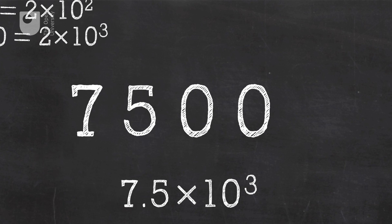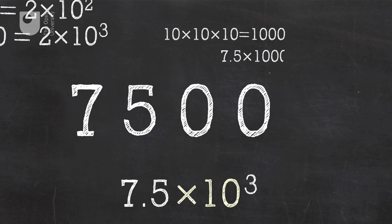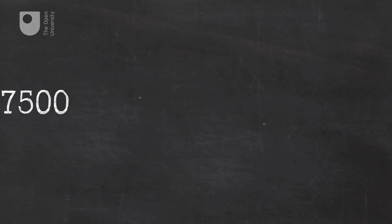We can check that this is correct by working out the individual components: ten times ten times ten equals one thousand, and 7.5 times one thousand gives us our original number of seven thousand five hundred.